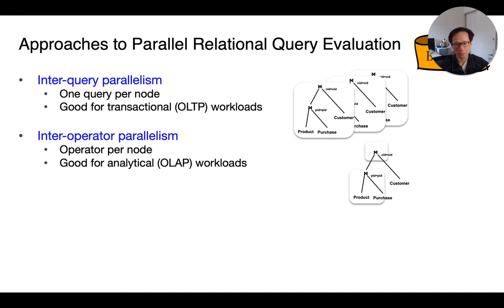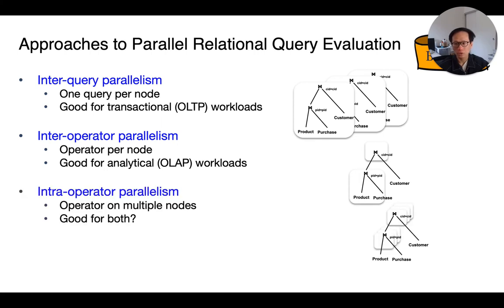In contrast to inter-query parallelism, this is good for running analytical, also known as OLAP queries. Recall that such queries tend to have complex query operators, such as lots of joins and lots of aggregates. Here, having a machine assigned to an individual operator will help make sure that we produce tuples as fast as we can, and not block the input of any downstream operators.